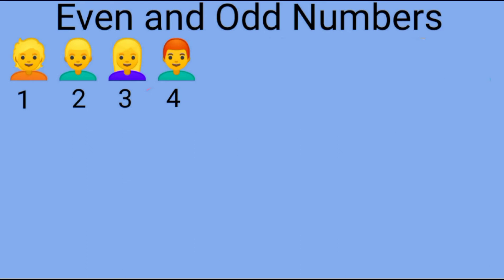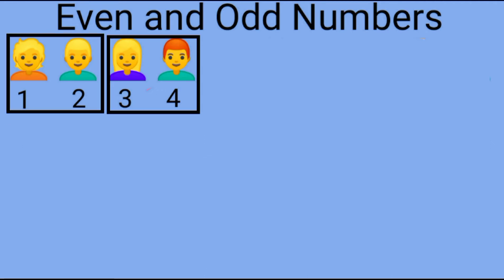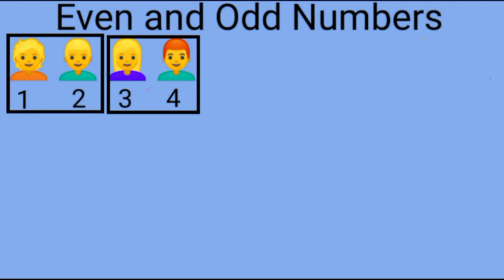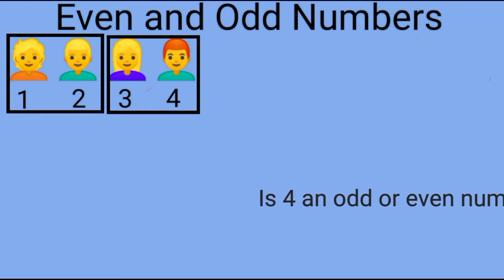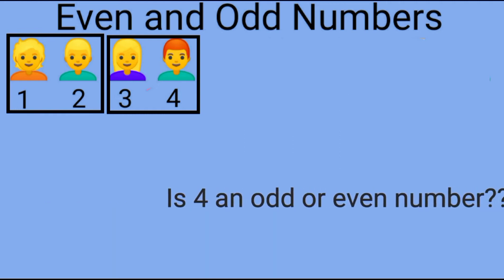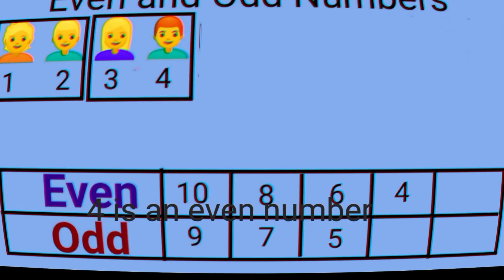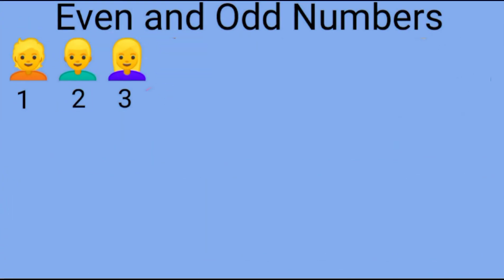Now let us see what would happen if there were only four students standing in the class. Would everyone have a partner? Yes! Have all the students been paired up evenly? Yes, all the students have been paired up evenly. Then tell me children, is four an odd or even number? Yes, four is an even number.